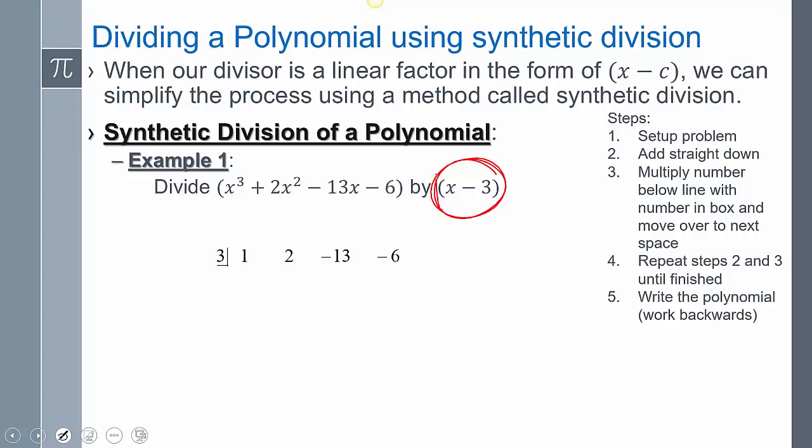So we have to set it up. To set it up, what we're going to do is you take whatever the quote unquote zero is. So you say x minus three equals zero, you add three to both sides, you get x equals three. That three is what goes in that box there.